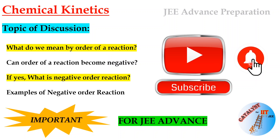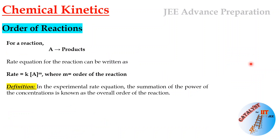Let's discuss the order of a reaction. If you have a reactant A giving a product, the rate equation can be written as: rate = k[A]^m, where k is the rate constant and m is the order of the reaction. By definition, in the experimental rate equation, the summation of the powers of the concentration terms is known as the overall order of the reaction. Here, with only one reactant, the order is simply m.